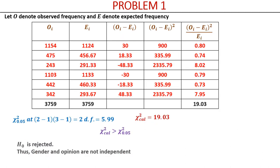With observed and expected values complete, we construct the table: list O, list E (totals match), take the difference O−E, square it, divide each by E, and sum to get the chi-square calculated value of 19.03. Degrees of freedom = (2−1)×(3−1) = 2, giving a table value of 5.99 at 5% level. The calculated value 19.03 is greater than 5.99, so we reject H0 — gender and opinion are dependent.